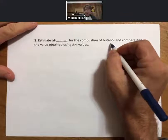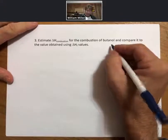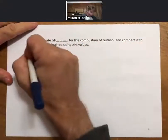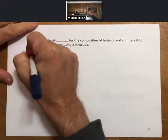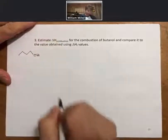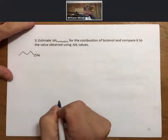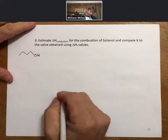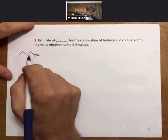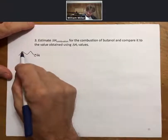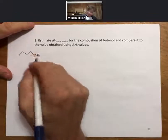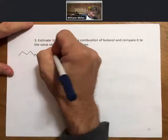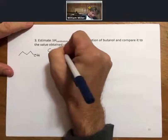If we were to draw it as a skeletal structure, it would be one, two, three, four with an OH group. So that is butanol, and its formula with one, two, three, four, five, six, seven, eight, nine, ten would be C4H10O.